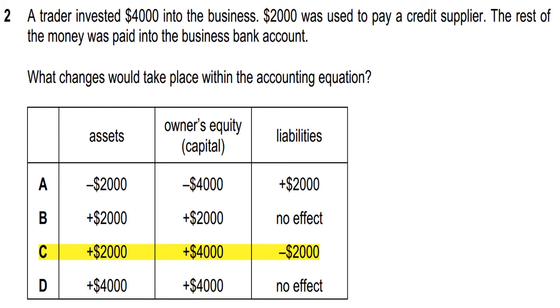And the liability will decrease by $2,000, because the trader paid the credit supplier, reducing the liability by $2,000.